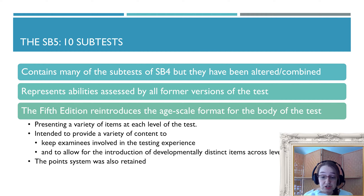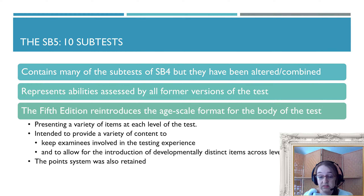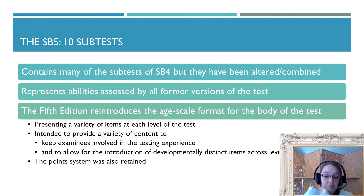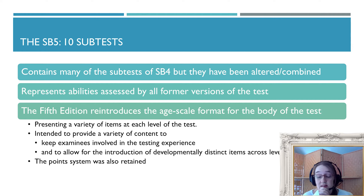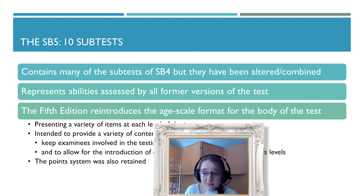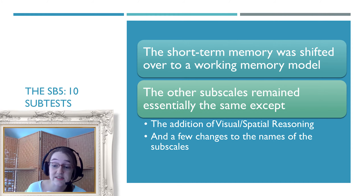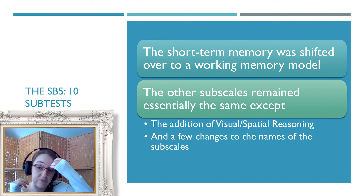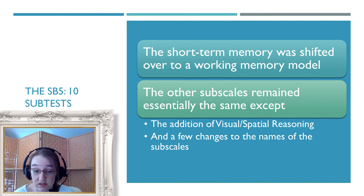The older editions present a variety of items at each level of the test. The reason for variety is to keep examinees involved and interested, and it allows for the introduction of developmentally distinct items across levels. It also retains the old point system. The short-term memory subtest has been shifted over to the working memory piece, and almost all other subscales are the same, other than the addition of the visual-spatial reasoning component and a few name changes.